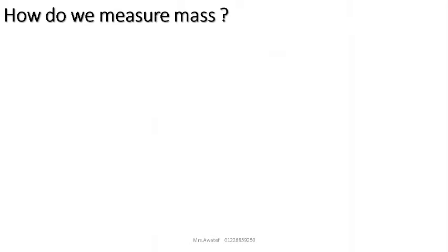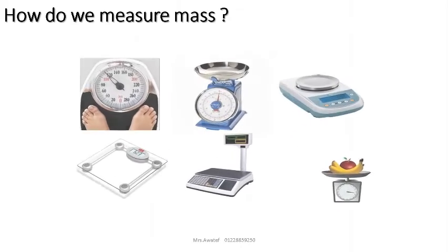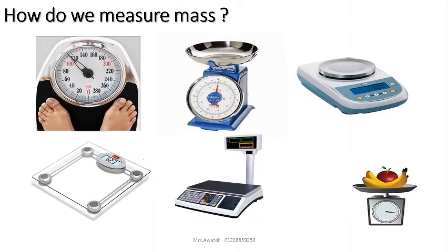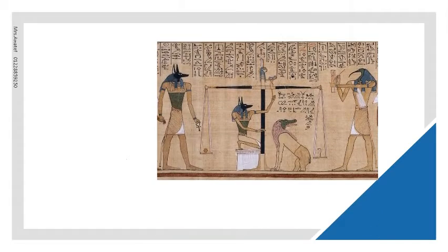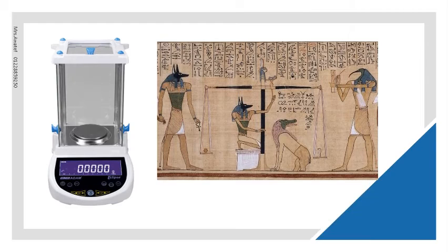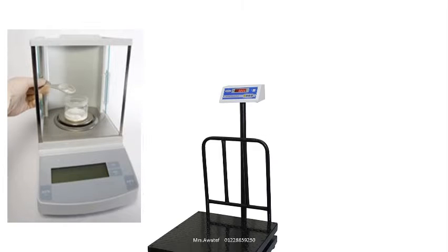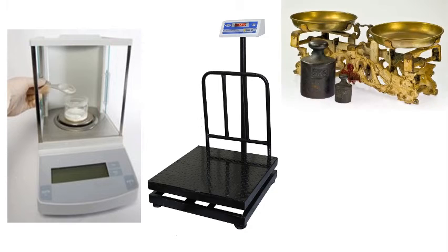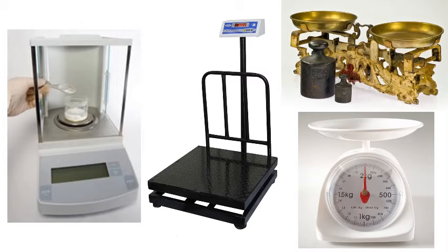How do we measure mass? Mass of an object is measured by different types or models of balances. The units used in measuring mass are tons, kilograms, and grams.